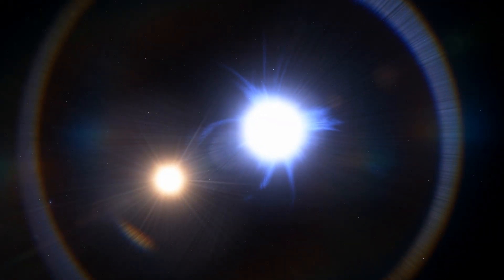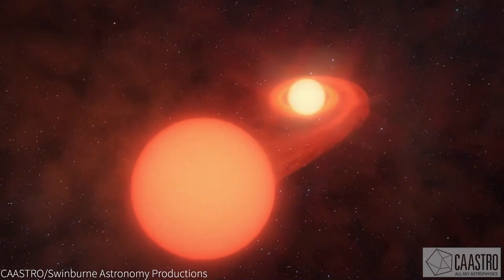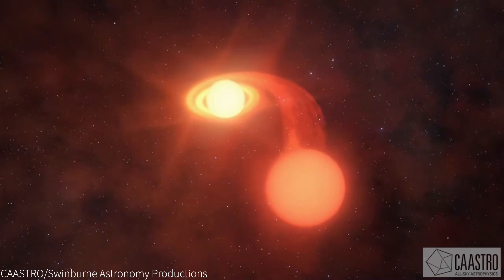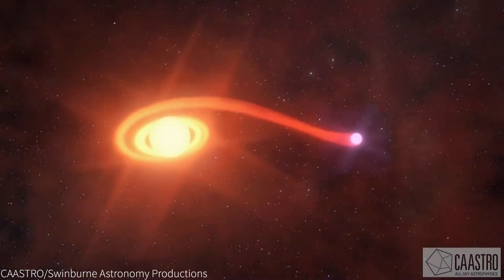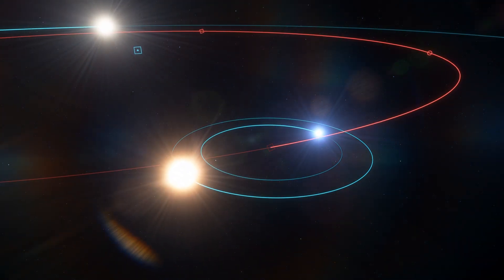The main sequence star in the inner binary strips matter off the helium star into an accretion disk, with jets coming off the poles, exacerbating the helium star's mass loss, revealing a massive white dwarf at its former core. The inner binary is much closer together by this point.